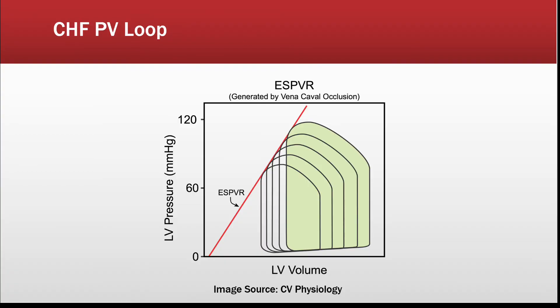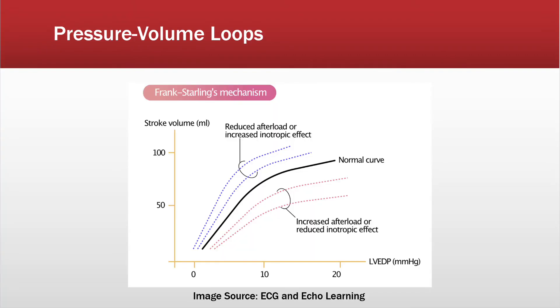These effects change the way the pressure volume loop looks. It causes the loop to appear taller, which represents a greater amount of work done by the heart in order to pump the blood. Relating this to Frank-Starling's law of the heart, the curve for patients with congestive heart failure follows the red lines, which means the afterload is larger.